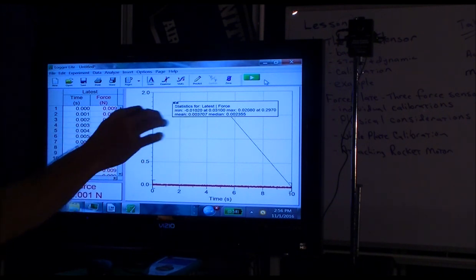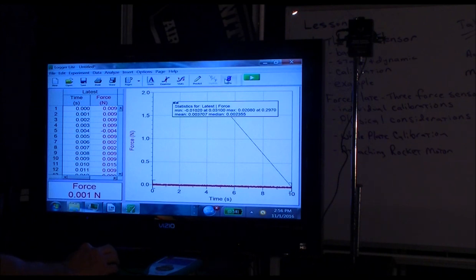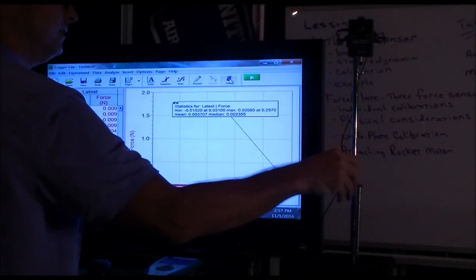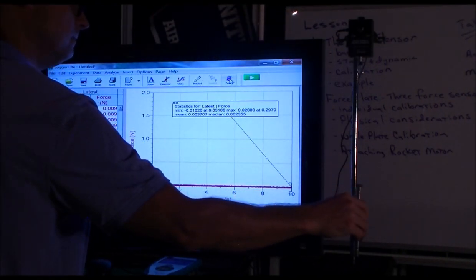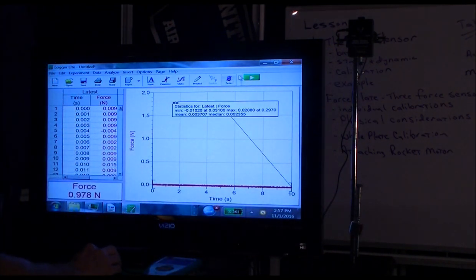our mean was a little bit high when we had the hanging weight by about 0.004. So if we re-zero it, odds are pretty good that if we run it again, we'll have accuracy closer to what we're hoping for.